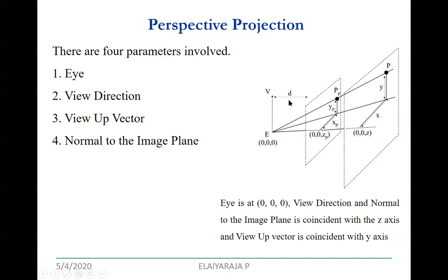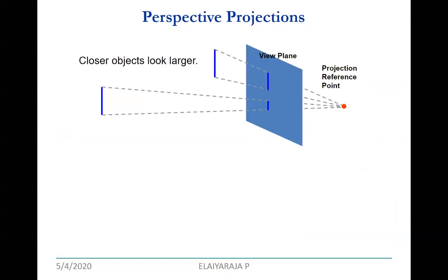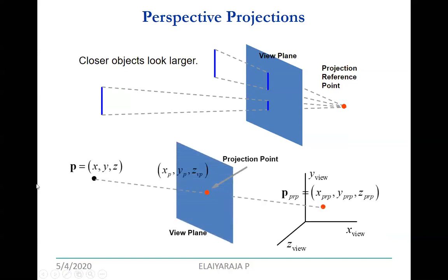In perspective projection, closer objects look larger. All projection lines meet at one point, called the projection reference point, on the viewing plane. Your object point in space has coordinates (x, y, z), and on the viewing plane you get the projected point (x', y'). Through the viewpoint z, you calculate the perspective projection values x-perspective, y-perspective, and z-perspective.